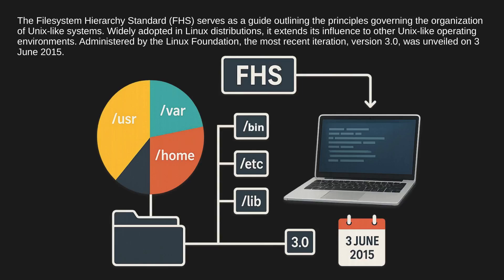The File System Hierarchy Standard serves as a guide outlining the principles governing the organization of Unix-like systems. Widely adopted in Linux distributions, it extends its influence to other Unix-like operating environments. Administered by the Linux Foundation, the most recent iteration, version 3.0, was unveiled on 3rd June 2015.